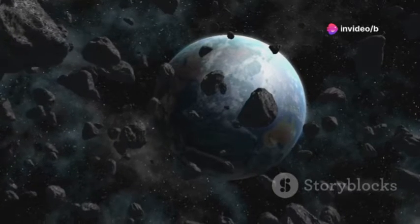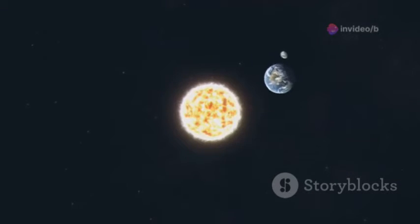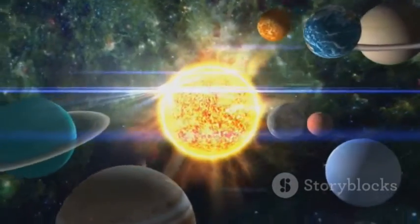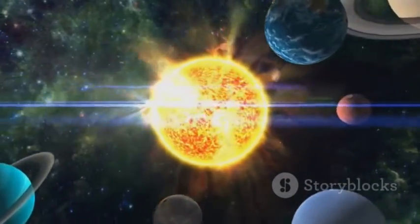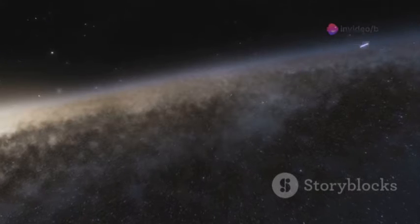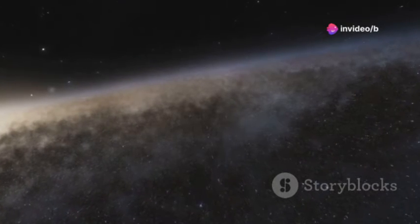But wait, there's more. Our entire solar system is also on the move. We're all spinning around the center of our Milky Way galaxy. And guess what? Our galaxy is part of a local group of galaxies, all of which are drifting through the universe.